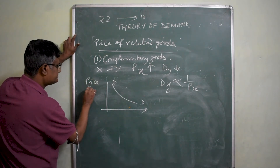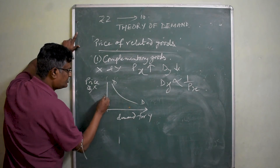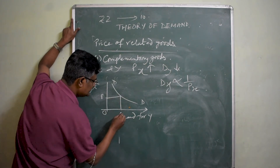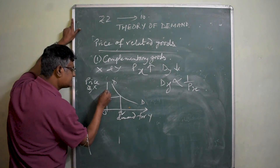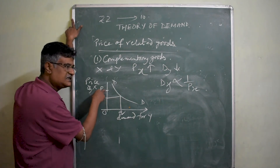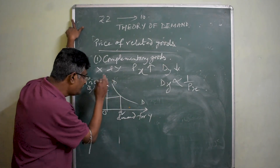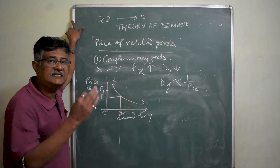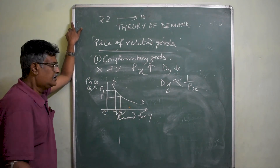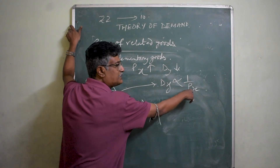Here we take price of X on one axis and demand for Y on the other. When the price of X is OP and quantity demanded is OQ — now when the price of X rises to OP1, with the rising price of X the demand for X falls, and consequently Y, which is used along with X, also has a decline in demand — it reduces from OQ to OQ1. So demand for Y is inversely related to the price of X. This is the case of complementary goods.